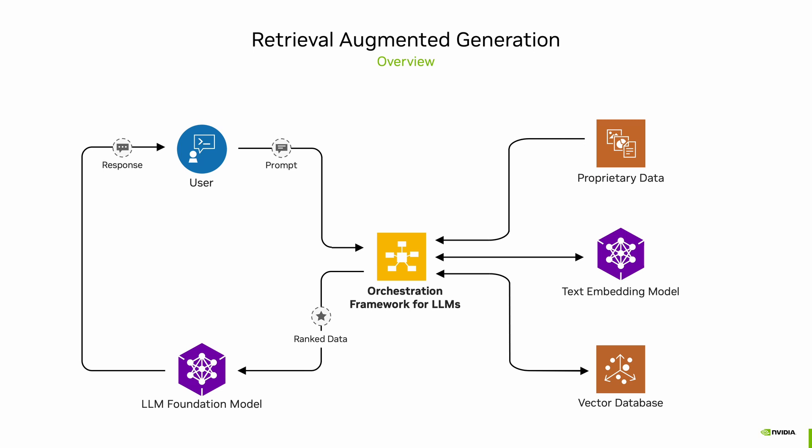As you can see in this slide, the high-level workflow consists of different components that are integrated together. The overall workflow can be divided into two steps. The first step is to convert your enterprise data — which can be in the form of PDFs, text, or manuals — into vector embeddings and store them in a vector database. You can think of this as a one-time offline step.